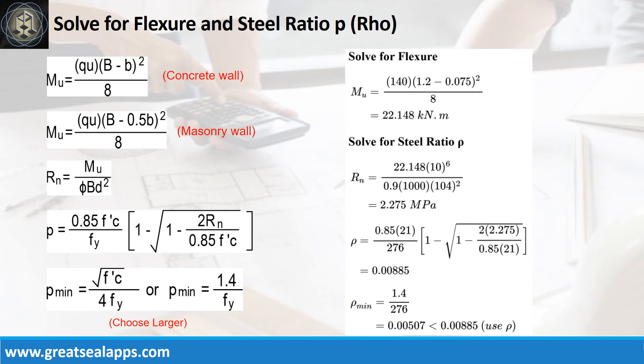Given resistance factor equals 0.9, B equals 1000mm and D equals 104mm.